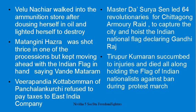Master Surya Sen led revolutionaries in the Chittagong Armoury Raid. Sixty-four people along with him went and raided the Chittagong Armoury, hoisted the Indian National Flag, and declared that going forward this would be 'Gandhi Raj,' not British Raj.